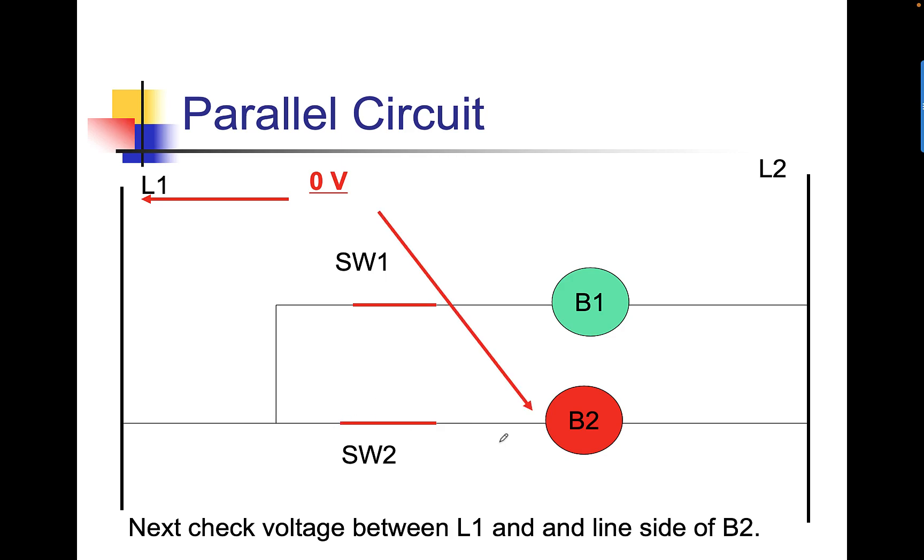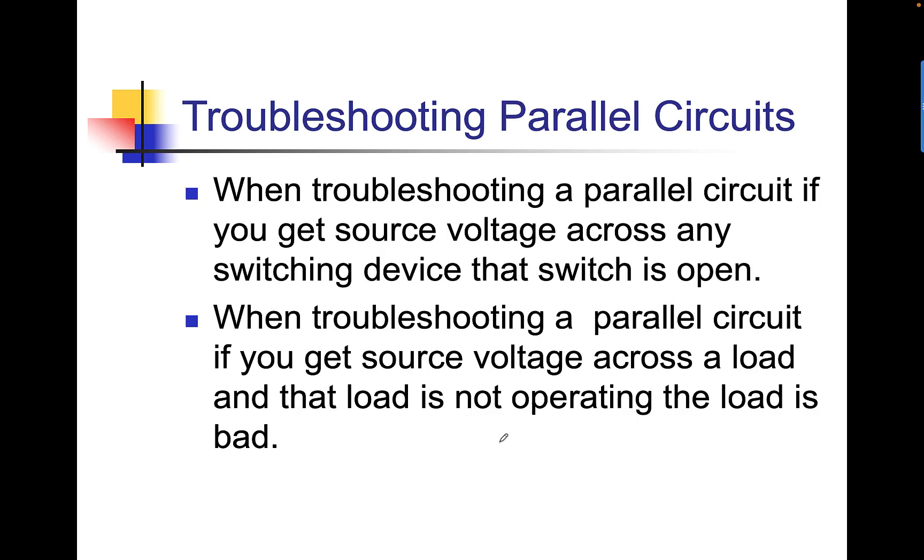Now, is this bulb good or bad? Well, from the PowerPoint diagram, I can't tell you, but if the load is operational, in other words, if whatever B2 is working and I have 240 volts, the bulb is good. And it's a good reason. If I have 240 volts at this point and the B2 is not doing what it's supposed to do, let's just say it's a light bulb, the light bulb isn't on, it tells me we have a bad light bulb. And I'm going to continue.